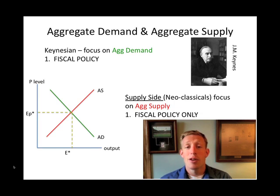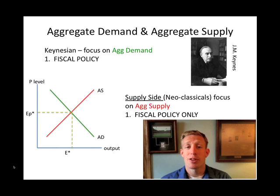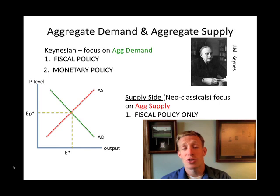One significant difference between Keynesians and supply-siders is their use of monetary policy. Monetary policy is typically a Keynesian policy because it affects aggregate demand — if there's more money, people buy more things, shifting the aggregate demand curve out and to the right.